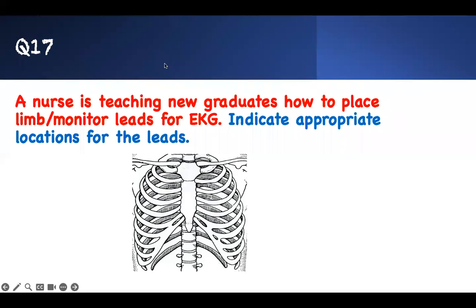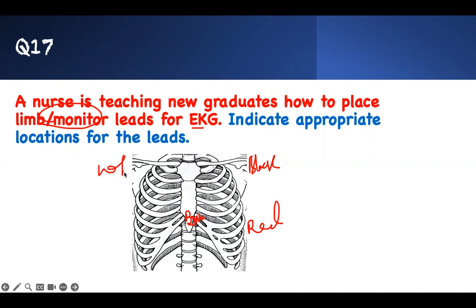Number seventeen: A nurse is teaching a new graduate how to place monitor limb leads for EKG. Brown leads go on the chest. Left side gets black leads — for the smoke. Red goes on the left lower. White goes on the right upper. Green goes on the right lower. That is the correct placement for monitor leads.